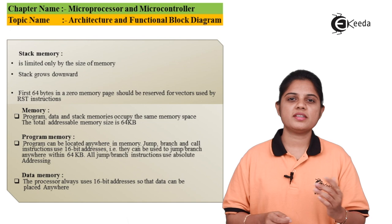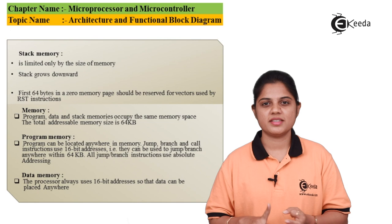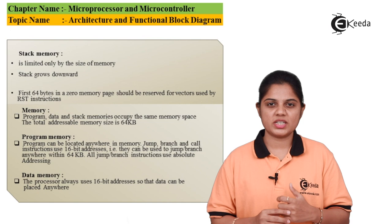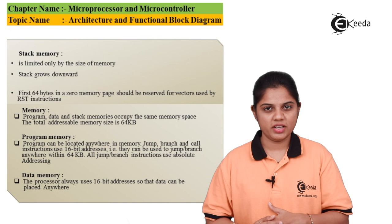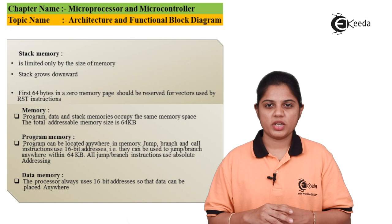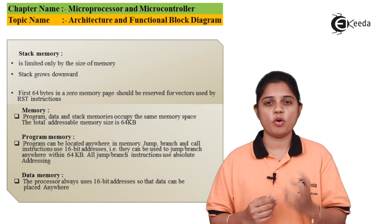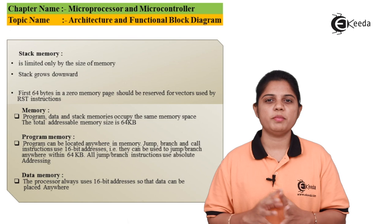The 8085 has different types of memory locations: stack memory, program memory, and data memory. With a 16-bit address bus, 2 raised to 16 equals 65,536 memory locations are available. In these 64 KB memory locations, data can be stored anywhere. The data bus can control access from any memory location — it can jump, fetch, and perform branch operations anywhere within the 64 KB memory space.